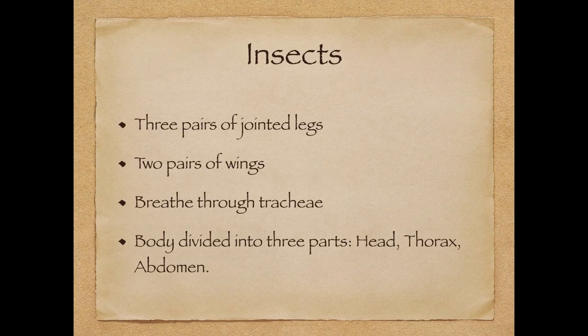Next, we're going to look at class insects. Insects are defined by having only three pairs of jointed legs, meaning they have six jointed legs. Some of them have two pairs of wings and some don't. They breathe through the trachea. Their body is divided into three parts: the head, the thorax, and the abdomen. The thorax is the short part between the head and abdomen, and it is where the insect's wings are connected to the body.